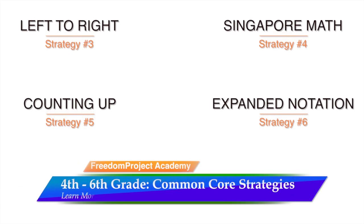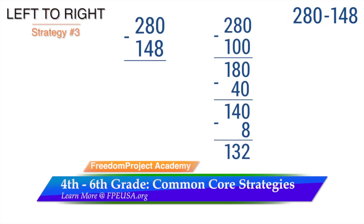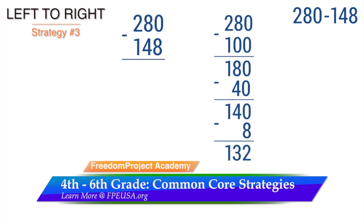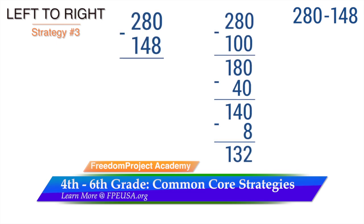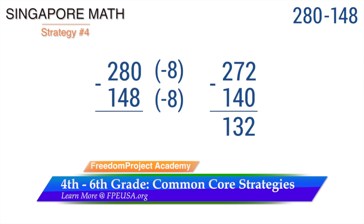Now let's look at some upper elementary strategies. The left-to-right or mental math strategy is not only simplified and watered down, but it trains the children to subtract from left to right, which leaves students confused and unable to use the traditional right-to-left method. The students reach higher levels of math unable to subtract without resorting to one of these strategies.